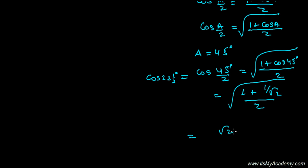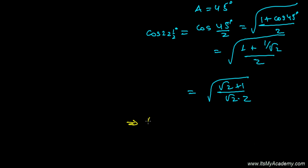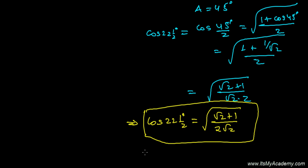So it's root 2 plus 1 divided by 2 and this 2 is also there. So it's 2 and these all are inside the root. So let me write it a little properly. So it's cosine of 22 and a half degrees equals to root 2 plus 1 divided by 2 root 2, and these all are inside the root. So this is how we find out the value of cosine of 22 and a half degrees.